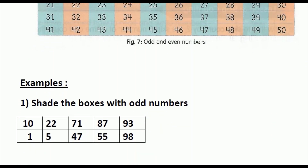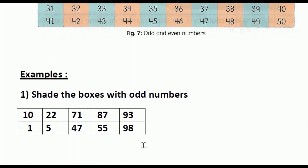Now, examples: shade the boxes with odd numbers. The rule for finding odd numbers is the number should end with 1, 3, 5, 7, or 9. First, we will take the number 10. Here 10 ends with 0, and 0 is an even number, so we cannot shade the number 10.